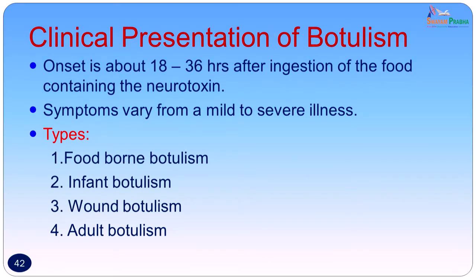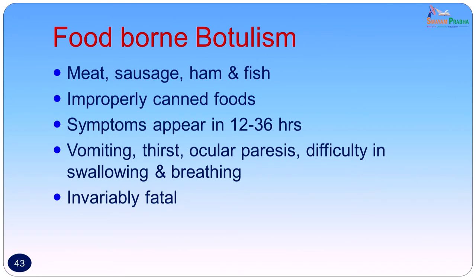The clinical presentation of botulism: onset is 18 to 36 hours after ingestion of food containing the neurotoxin. Symptoms vary from mild to severe. The most common type is food-borne botulism, usually from infected meat, sausages, ham, and fish — specifically improperly canned foods; even improperly canned vegetarian foods can cause food-borne botulism. Symptoms include vomiting, thirst, ocular paralysis, difficulty in swallowing and breathing, and the disease is often fatal because it is not suspected and treatment is not started in time. There can also be a problem of availability of the botulism antitoxin.